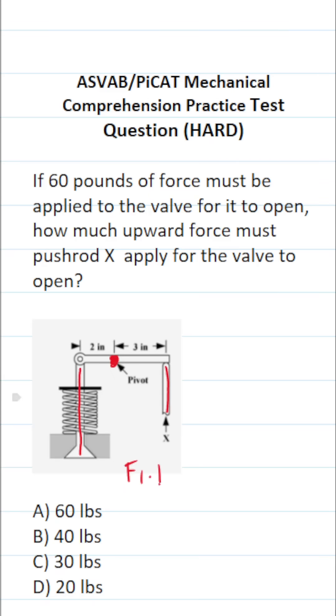F1 times D1 equals F2 times D2. What is F1? F1 is the amount of force we must apply to open this valve, and according to the problem, that's going to be 60 pounds.